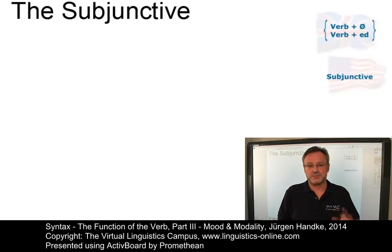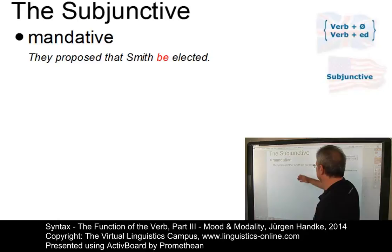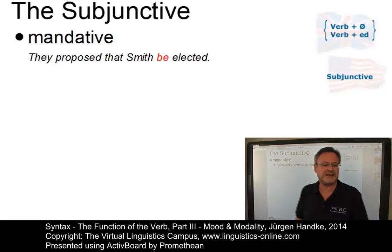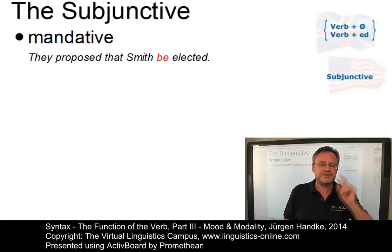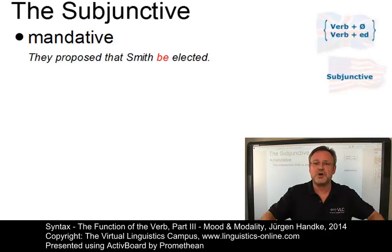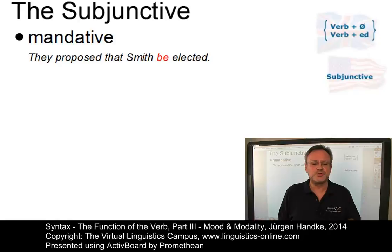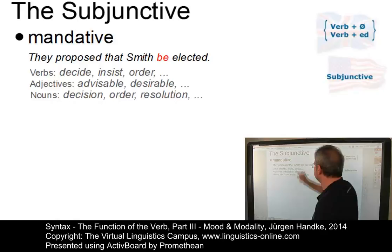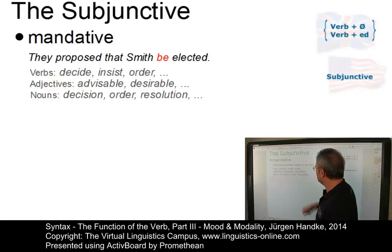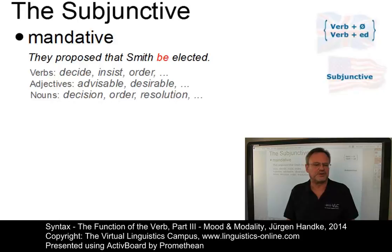The most common occurrence of the subjunctive can be found in that-clauses — the so-called mandative subjunctive. For example: 'They proposed that Smith be elected.' This subjunctive can be used with any verb if the subordinate clause is introduced by an expression of demand, recommendation, proposal, etc. The following elements commonly introduce a mandative subjunctive: verbs (we decided that / we insisted that / we ordered that Smith be elected), adjectives (it is advisable or desirable that Smith be elected), or even nouns (we took the decision that Smith be elected).